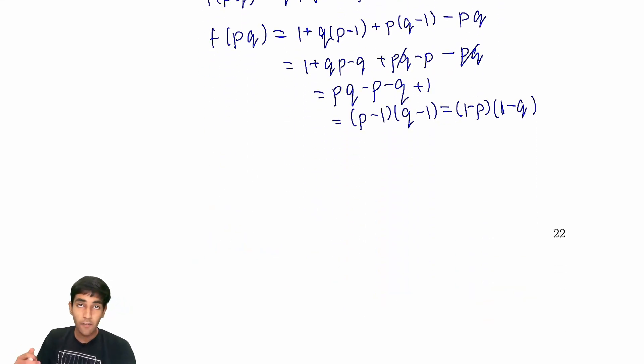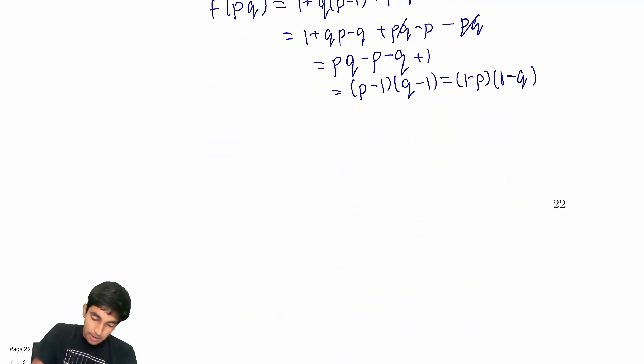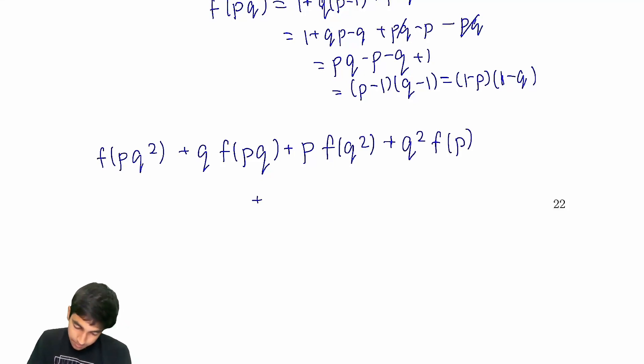What about f of pq squared? What we're trying to find. This is the hardest one so far, of course. What we do is, we just write out everything, just like we've always been doing. f(pq²) plus q·f(pq) plus p·f(q²) plus, what other factors could we have? q²·f(p) plus pq·f(q) plus pq²·f(1), which is just pq². All of this is 1.